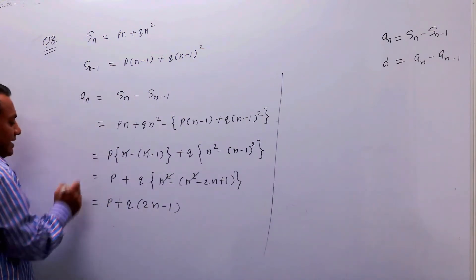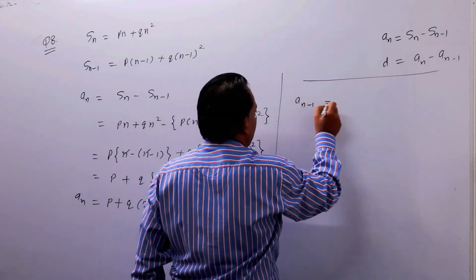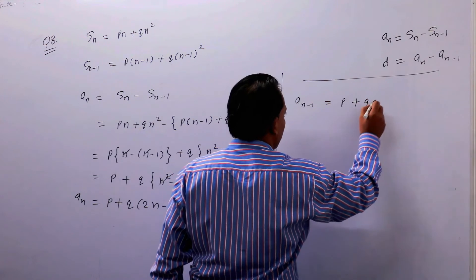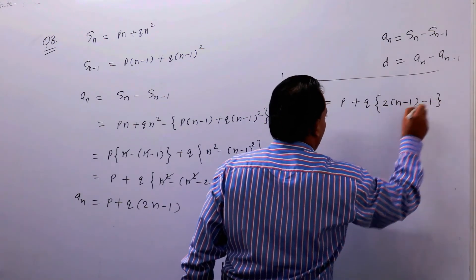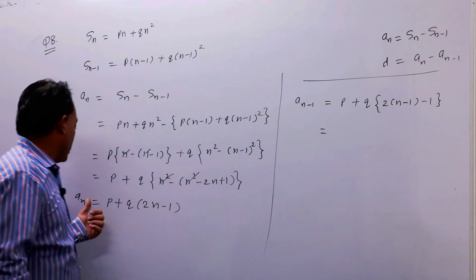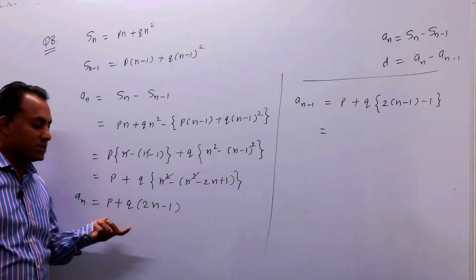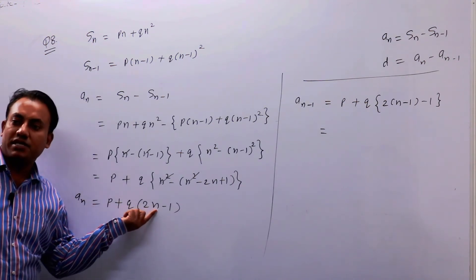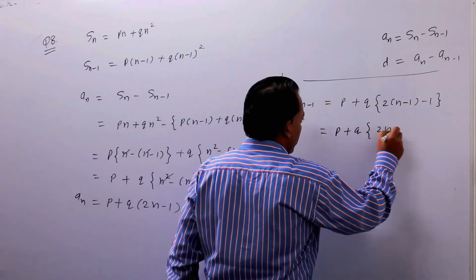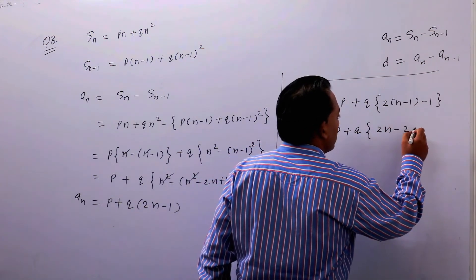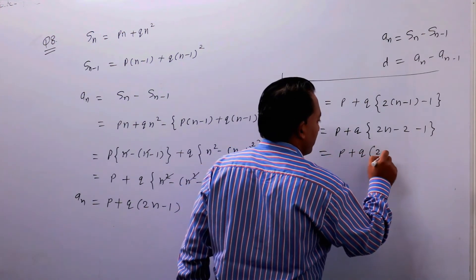अब बच्चों, an मिल गया। हमें a(n-1) चाहिए। a(n-1) के लिए an में n को replace करें n minus 1 से। तो 2n minus 1 में n की जगह (n-1) रखेंगे: 2(n-1) minus 1 = 2n minus 2 minus 1 = 2n minus 3। तो a(n-1) = P + Q(2n − 3)।